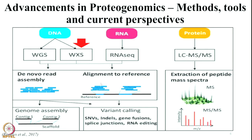Whole exome sequencing helps in alignment of genes on the reference genome. Similarly, in the case of RNA-seq, one extracts the RNA and goes for RNA sequencing. RNA sequencing adds value by providing information regarding introns which are also involved in the production of a protein. There are many proteins which are not only formed by exons but also include some part of introns. So if we do whole genome sequencing or whole exome sequencing, we would miss out those introns contributing to protein production. But with RNA-seq, we are able to identify those introns.